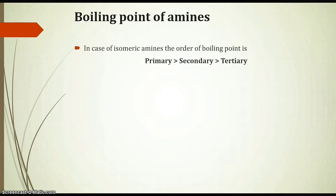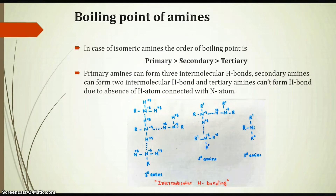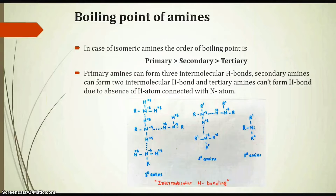What is the reason behind this order? Primary amines can form three intermolecular hydrogen bonds, while secondary amines can form two intermolecular hydrogen bonds, and tertiary amines cannot form hydrogen bonds due to the absence of a hydrogen atom connected with the nitrogen atom. As shown in the diagram, primary amines form three intermolecular hydrogen bonds, secondary amines form two, and tertiary amines cannot form any. Hence primary amines have the highest boiling point and tertiary amines have the lowest boiling point.